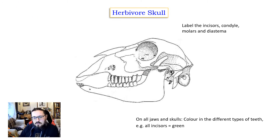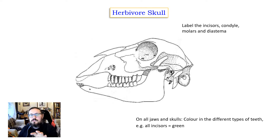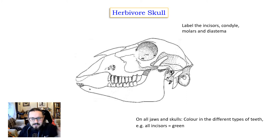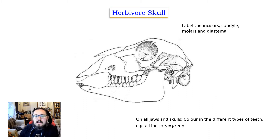Look at those, add colour to your diagrams, and label the different parts. A little annotation around each part of the teeth and their main function would be very useful and very useful for revision.